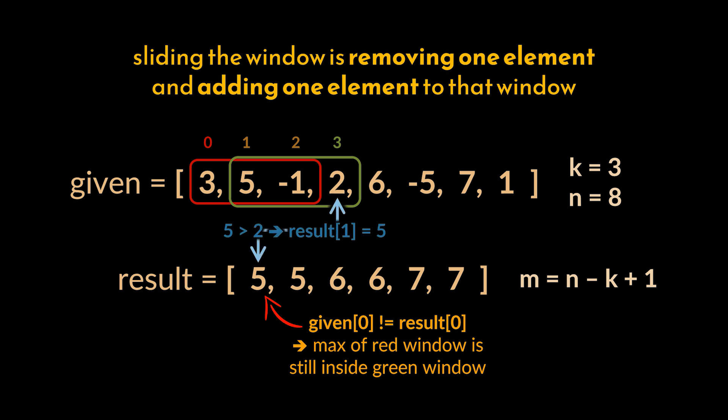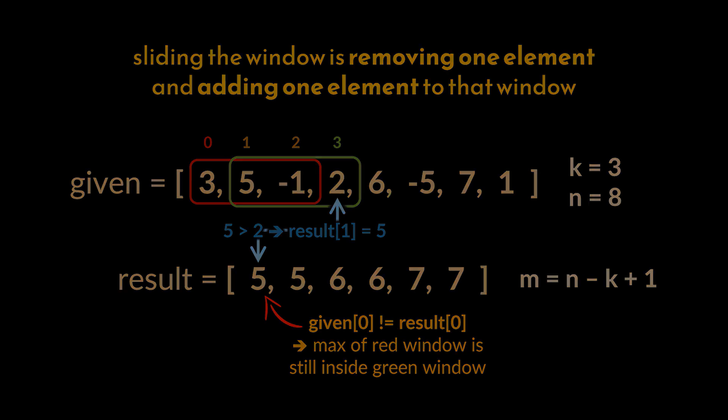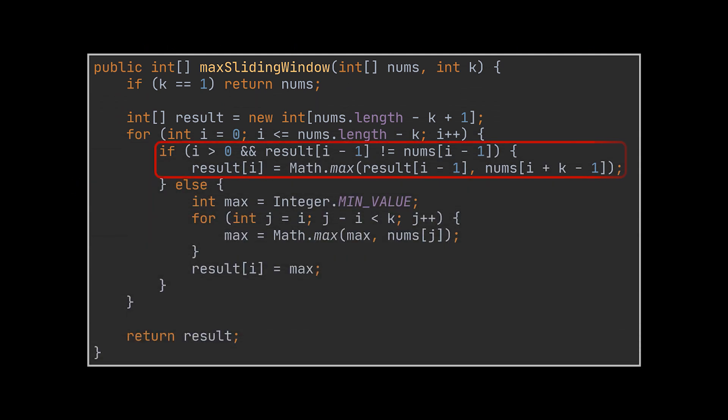Hence, the only comparison we need to make is check if the current element being added is bigger than the previously calculated maximum. If that's the case, we can skip the inner loop altogether. To translate this in code, all we have to do is add an if clause with the condition we just mentioned to the same code we previously wrote.